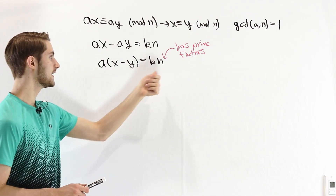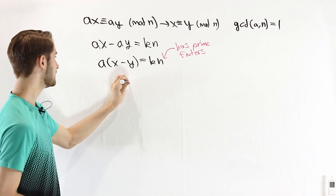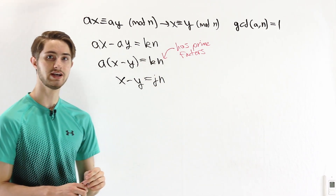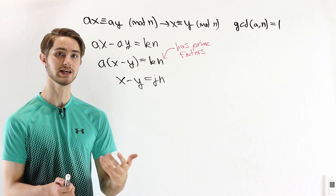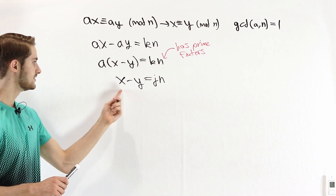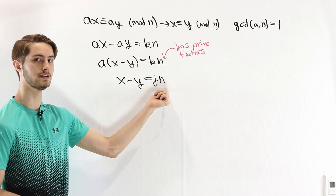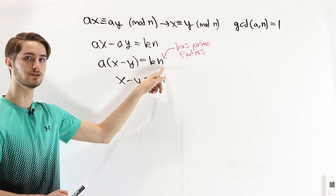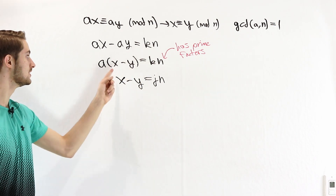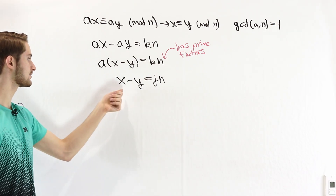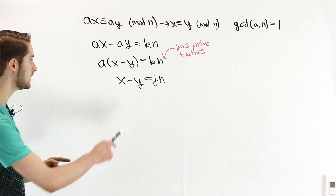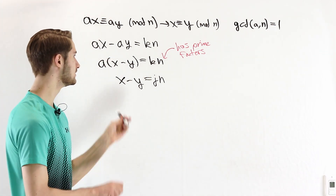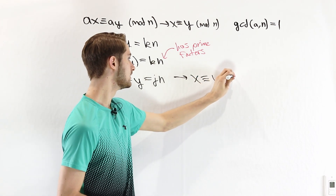Because both products must have the same prime factors to be equal, and a doesn't have any of the prime factors of n, x − y must include all of those factors — meaning x − y is a multiple of n. By the definition of congruence mod n, we can conclude x ≡ y mod n.